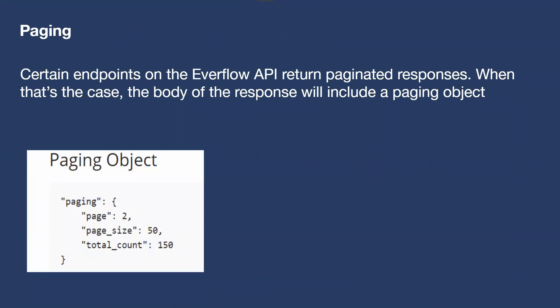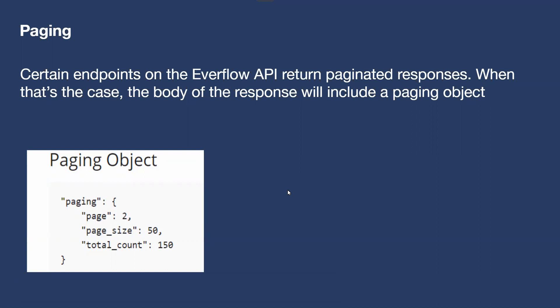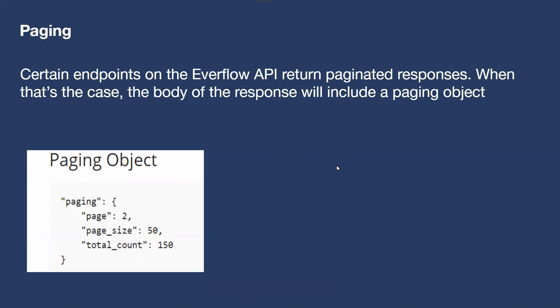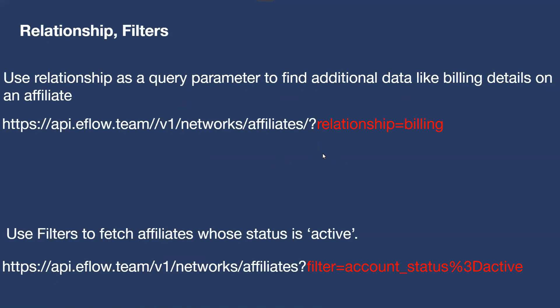Another topic that comes up often is paging. Sometimes Everflow returns data with a paging object, which refers to how many rows are in the body and how that data is formatted when returned. If a paging object is included, it's clearly defined in the documentation. It appears towards the end of the response. If you want to request multiple pages, you can iterate through them with multiple calls. You can also increase the page size to get more data in a single request.